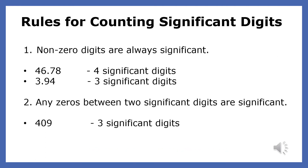Rules for counting significant digits. When you multiply, divide, or add numbers in physics, your answer must reflect the number of significant digits that were put into your equation. So you must be able to find the number of significant digits in all the numbers you're putting into your equation. Rule number one: non-zero digits are always significant. Look at 46.78 — that has four significant digits. 3.94 has three. They're all non-zero numbers.